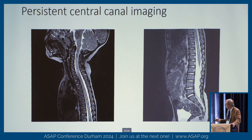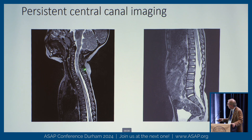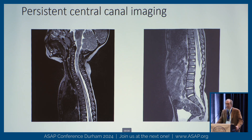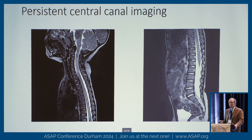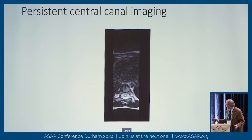Looking at a persistent central canal, things are somewhat different. We don't see a Chiari or a tethered cord, but we see a small white area in the middle of the spinal cord that's fairly extensive. However, if you look at the outline of the spinal cord, it's not expanded at all — it's very smooth. It just looks like someone took white-out and painted it right down the middle. There's no expansion. On cross-sectional imaging, you see kind of a bullseye, but the spinal cord is not expanded and not taking up the entire spinal canal.